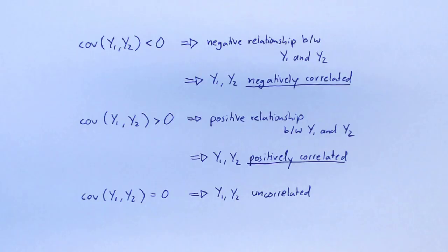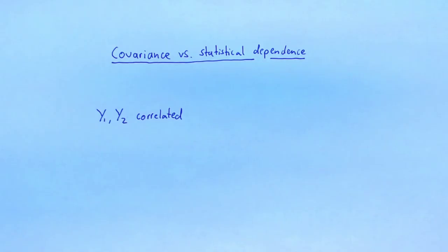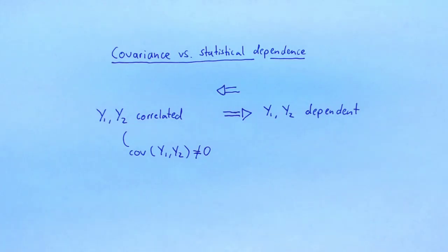Zero covariance means that the covariance does not detect a relationship between y1 and y2. The covariance measures certain aspects of statistical dependence. If two random variables y1 and y2 are correlated — that is, either negatively or positively correlated — then y1 and y2 are statistically dependent. The relationship in the other direction does not hold: two random variables can be statistically dependent and still be uncorrelated. In other words, there are some kinds of statistical dependence that are not picked up by the covariance.